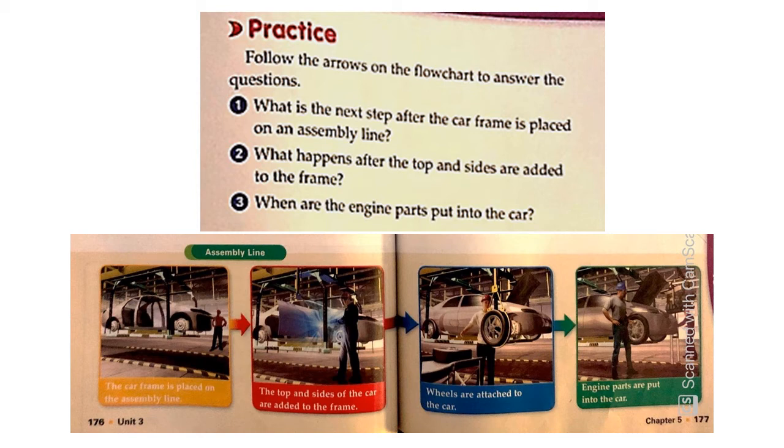And the last question here is when are the engine parts put into the car? And that's the last step that we see on this flowchart in the green box that states engine parts are put into the car after the wheels are attached. So you can see how I can read this flowchart in order to understand the process that takes place when a car is fixed or created on an assembly line.